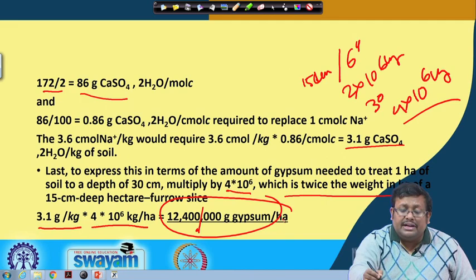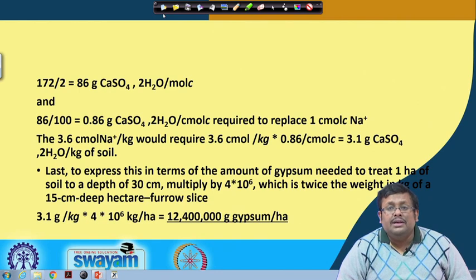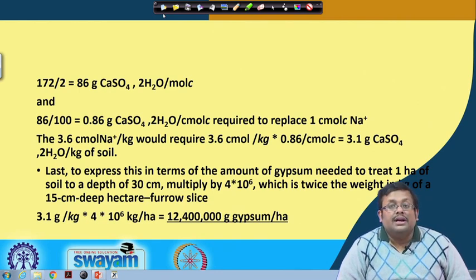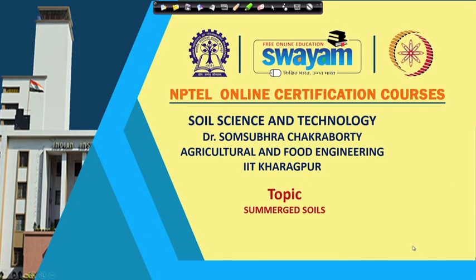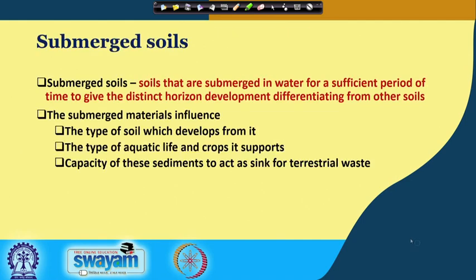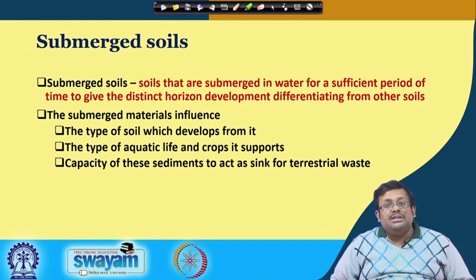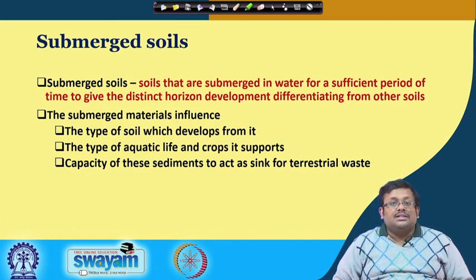I hope you have understood this solution; feel free to email me with further queries. Let us move ahead to our next topic: submerged soils. We will cover the types, characteristics, and importance of submerged soils. Submerged soils are soils submerged in water for a sufficient period of time to give distinct horizon development, differentiating them from other soils.